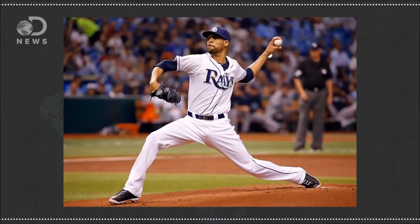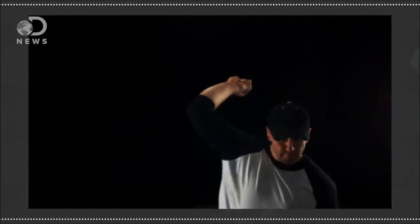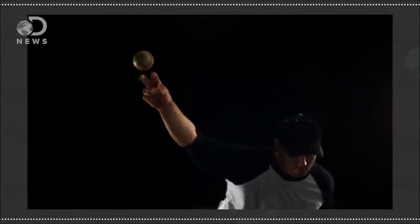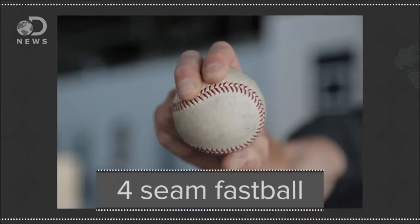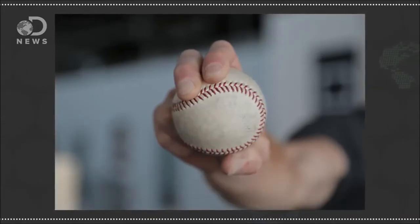Any physical activity is going to have some physics behind it, and one of the more nuanced aspects of baseball to a non-fan is the physics of different pitches. The most well-known pitch is the fastball, and the most direct variation is a four-seam fastball, where the fingers are placed across four seams. On release, the pitcher imparts backspin on the ball, and the result is the ball doesn't drop as much as it would otherwise, appearing to fight gravity and travel in more of a straight line.